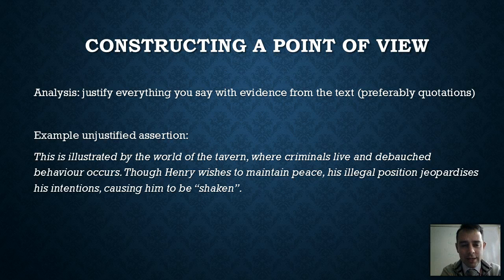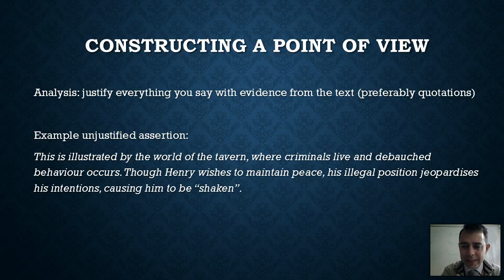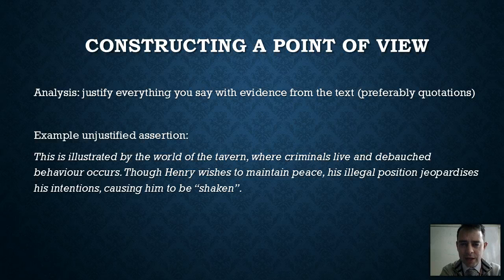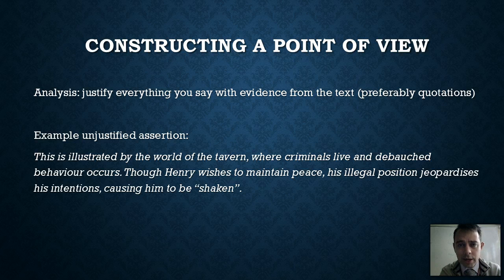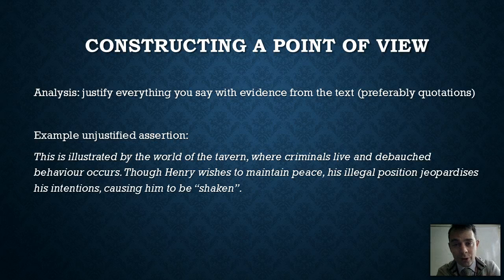Here's an unjustified assertion from a student's essay: 'This is illustrated by the world of the tavern, where criminals live and debauched behaviour occurs.' There's an assertion that criminals live there — prove it. What kind of debauched behaviour? I need evidence. 'Though Henry wishes to maintain peace' — how do you know that? Justify it. 'His intention jeopardises his legal position' — that needs to be justified too. We need to justify all those assertions, not just quote at the end.